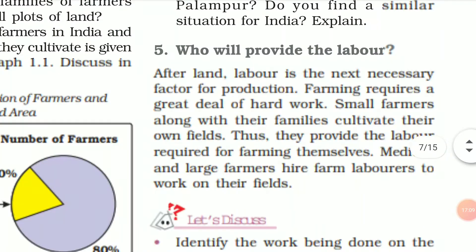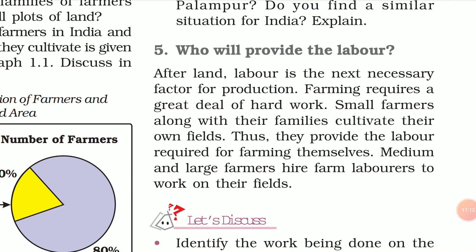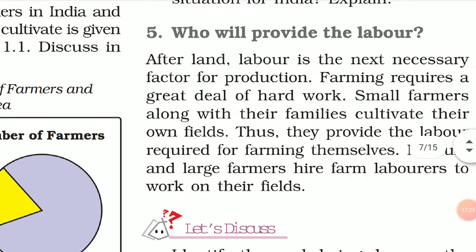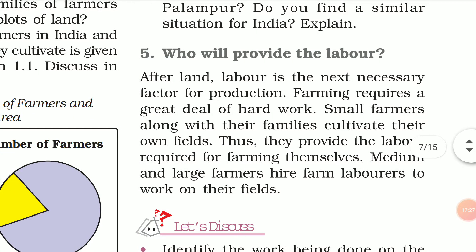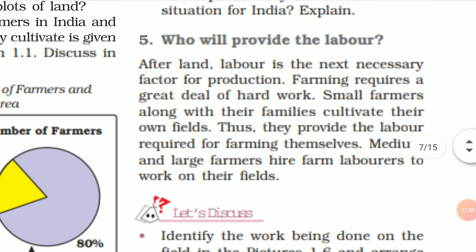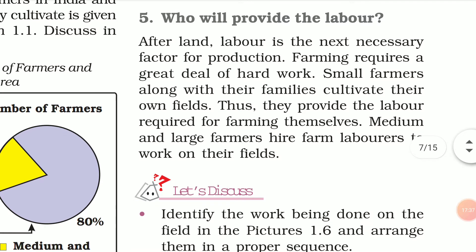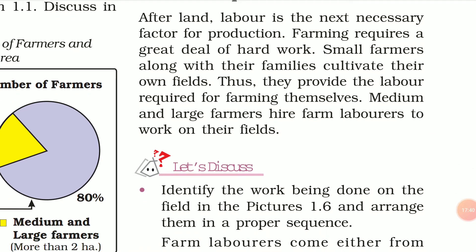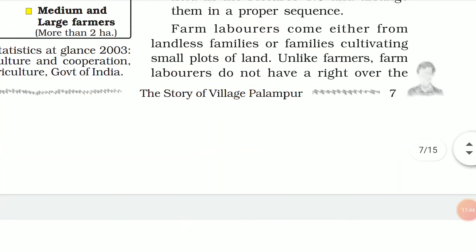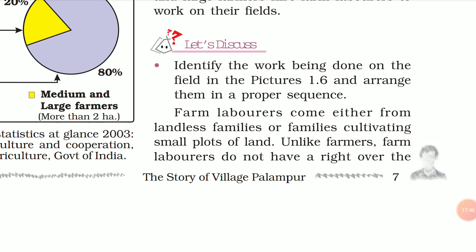After land, labour is the next necessary factor of production. Farming requires a great deal of hard work. Small farmers, along with their families, cultivate their own land — their wives, brothers, and children all work together since they have no money to hire labourers. They also help neighbours during peak seasons like harvesting and sowing.